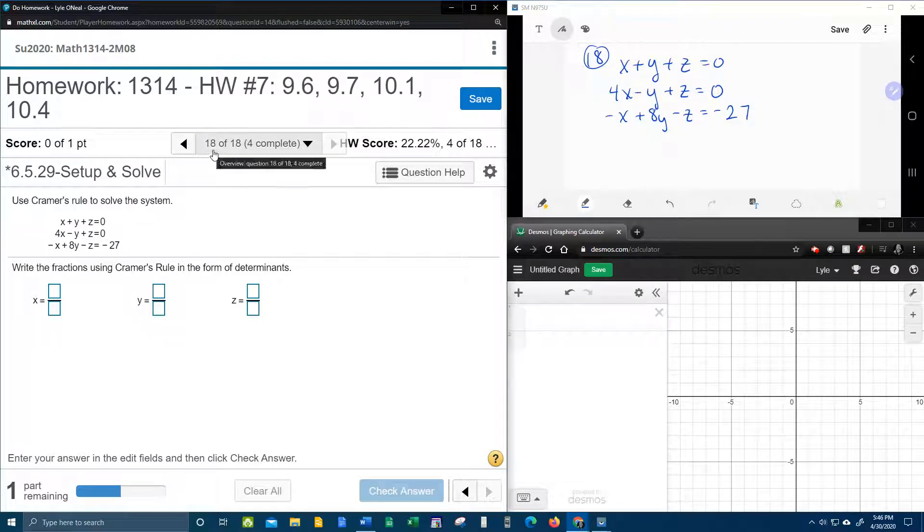All right, here we go. Question number 18 of 18. This is the last problem in our college algebra homework number 7 in MyLabMath. Here they give us a system of linear equations, and they want us to use Kramer's rule to solve. I saved the best for last. So take a deep breath and strap in. It's going to be a little bit of a long ride here.